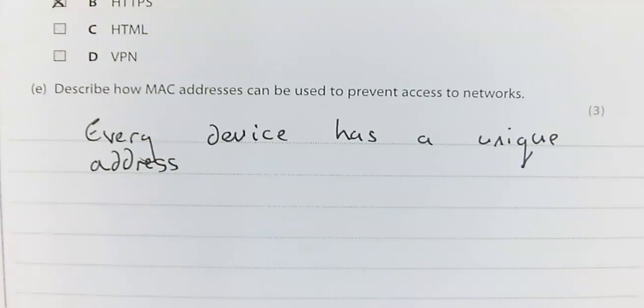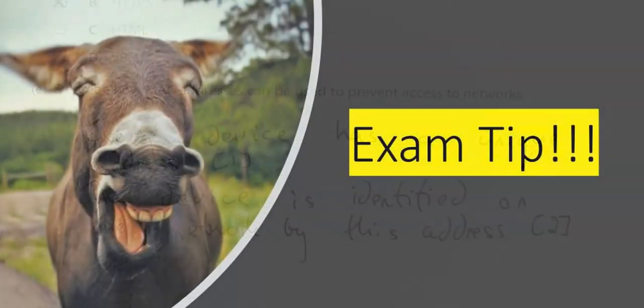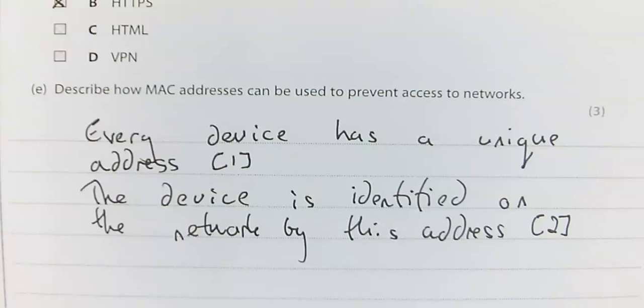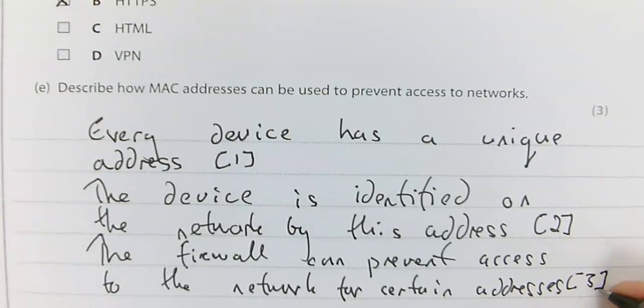So the hardware has its own unique address. For example, your iPhone, your smartphone, whatever it is, has a unique address. We start with every device has a unique address. The device is identified on the network by this address, that's two marks. Exam tip: a lot of students only got to two marks because they didn't mention that the firewall can check these addresses against any potential blacklists. Devices can be banned or removed, prevented access to a network through the list of MAC addresses that are not allowed. For my third mark, I need to say that the firewall can prevent access to the network for certain addresses on a specific list.